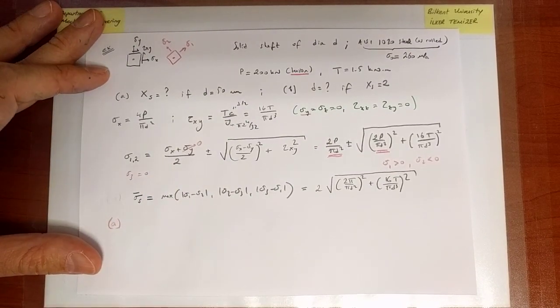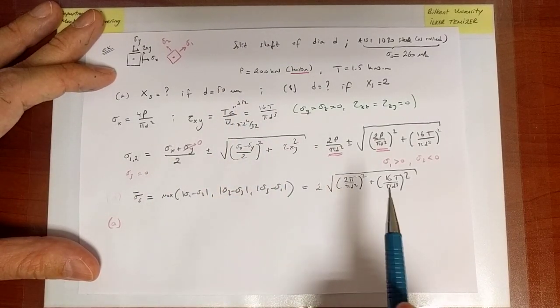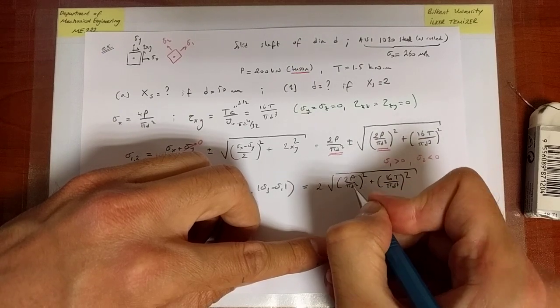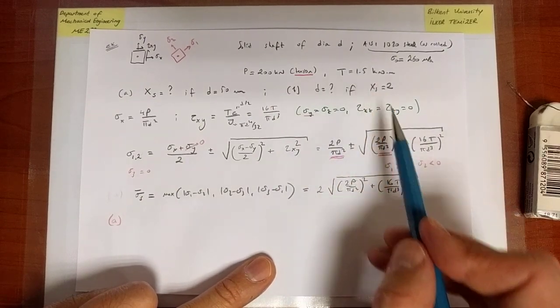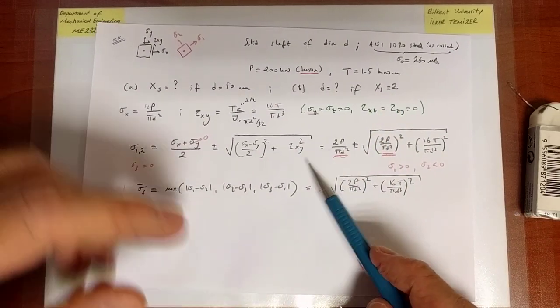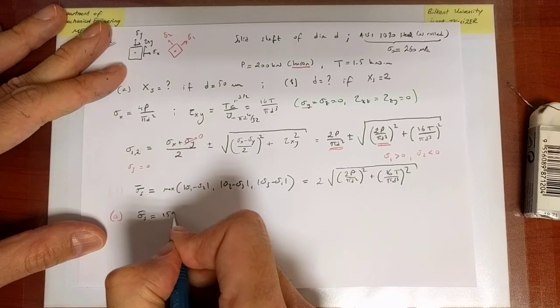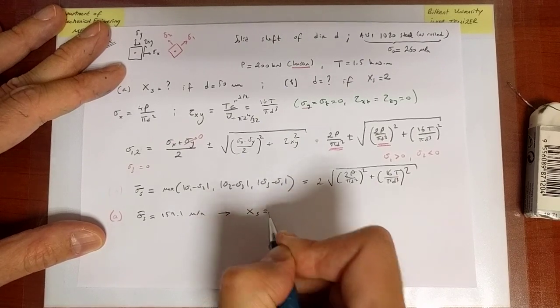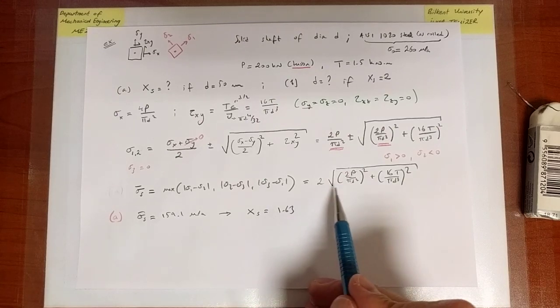And now in part A all I have to do is I need to plug in the value of P, 200 kilonewtons, T is 1.5 kilonewtons, I know the value of D, and I can immediately calculate what the value of sigma bar S is. And it comes out to be 159.1 MPa, and therefore with the given information of the yield strength, the safety factor is 1.63. So there you go, that's a straightforward evaluation of our observations.